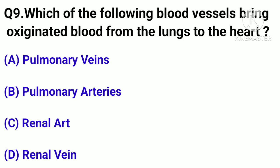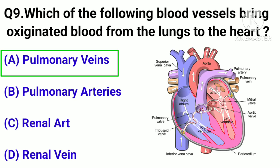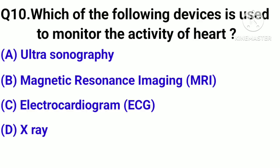Question number 9. Which of the following blood vessels bring oxygenated blood from the lungs to the heart? Option A: Pulmonary veins. Option B: Pulmonary arteries. Option C: Renal artery. Option D: Renal vein. Correct answer: Option A, Pulmonary veins.